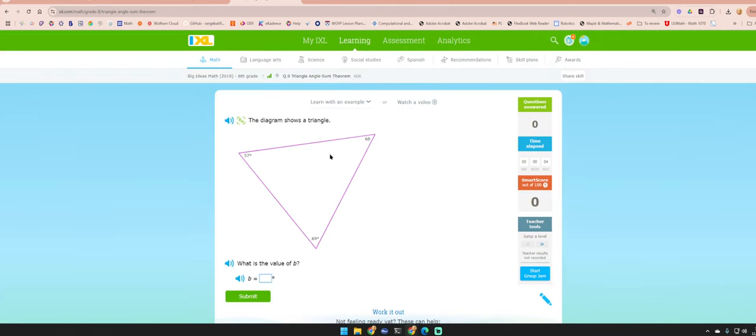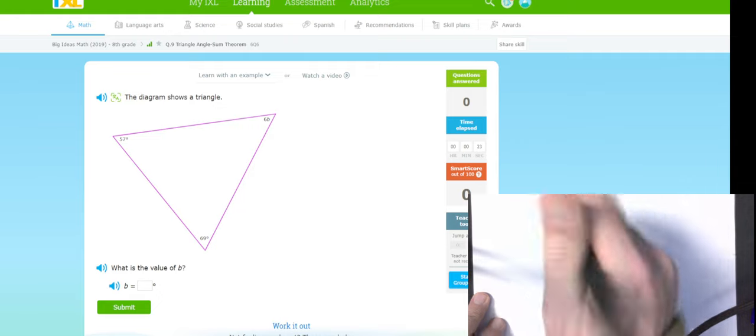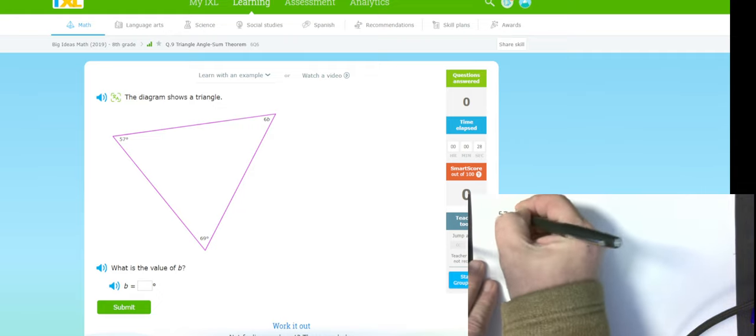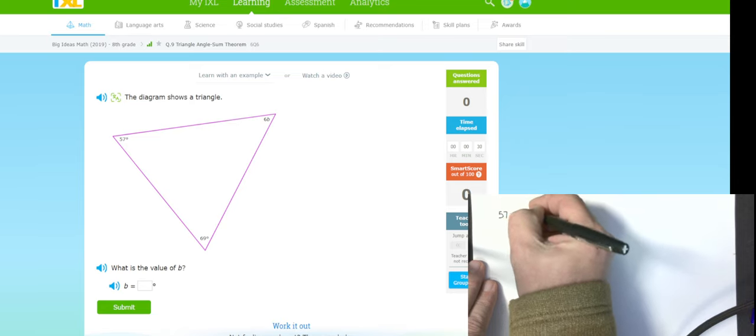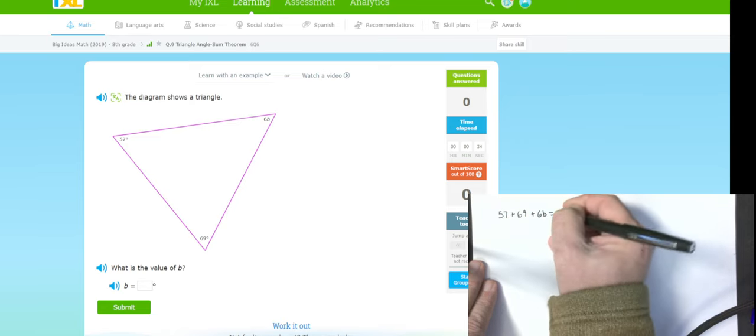This diagram shows a triangle. What is the value of B? So we're going to actually have to write out an equation and solve the equation. So let me bring out my piece of paper. Sorry about the keyboard cable in the way.